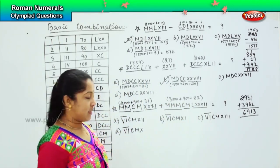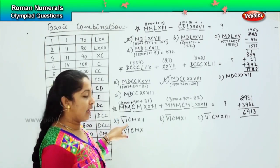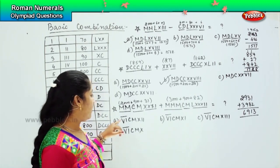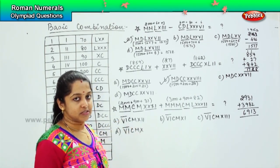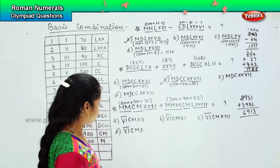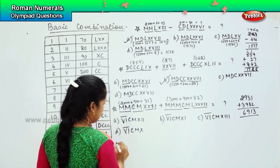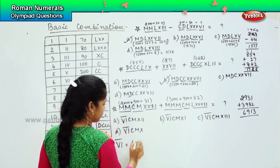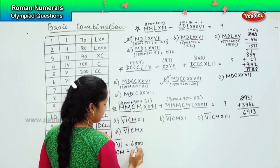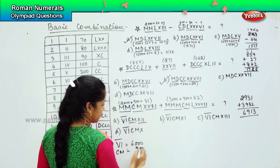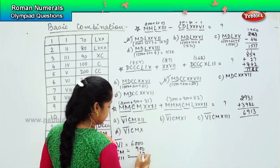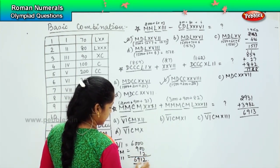Before this, children, if you notice, each alphabet has got one dash on top of it. So it means that it skip counts — it keeps on adding thousands. So this becomes 6000. VI with a dash equals 6000. CM is 900 and XII is 12, so this is 6912.